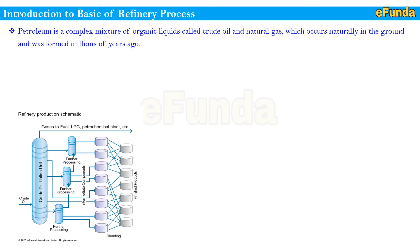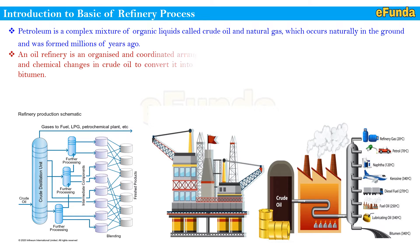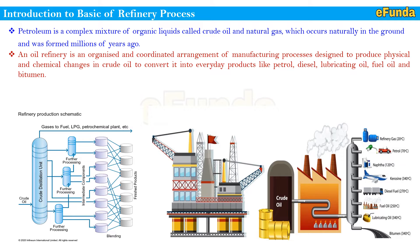Crude oil and natural gas are extracted from the ground on land or under the ocean by sinking an oil well. They are then transported by pipeline and shipped to refineries where their components are processed into refined products. An oil refinery is an organized arrangement of manufacturing processes designed to produce physical and chemical changes in crude oil, converting it into everyday products like petrol, diesel, lubricating oil, fuel oil, and bitumen.